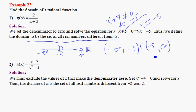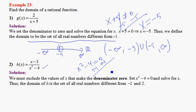For the second function h(x) = (x-3)/(x²-4), the denominator is x²-4. We set x²-4 = 0 and solve for x: add 4 to both sides to get x² = 4, then take the square root on both sides to get x = ±2.